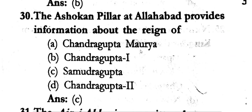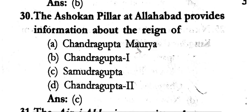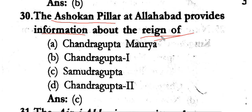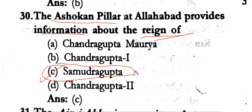Next important question: the Ashokan pillar at Allahabad provides information about the reign of Samudragupta. On the Ashokan pillar at Allahabad, information about Samudragupta's reign is inscribed. The answer is Samudragupta.